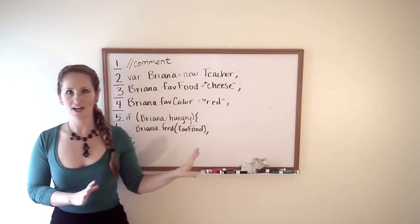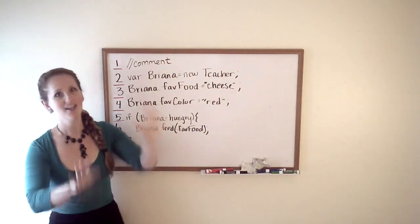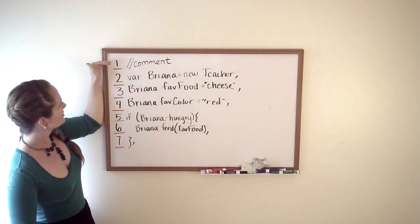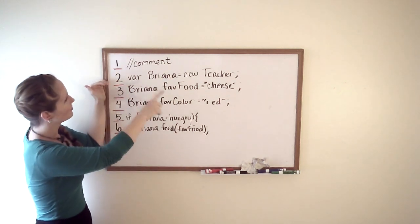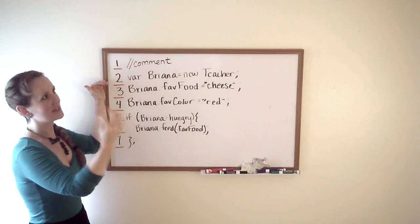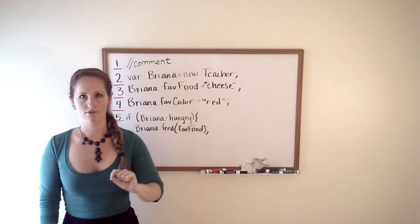Now, what I've written here is not actually relevant in JavaScript—there is no .feed method—but the point is it looks at number one and says, 'oh, that's a comment, I'm going to ignore that and move on.' Number two, var brianna equals new teacher. It processes that and then moves on. Everything is done sequentially, just straight down.